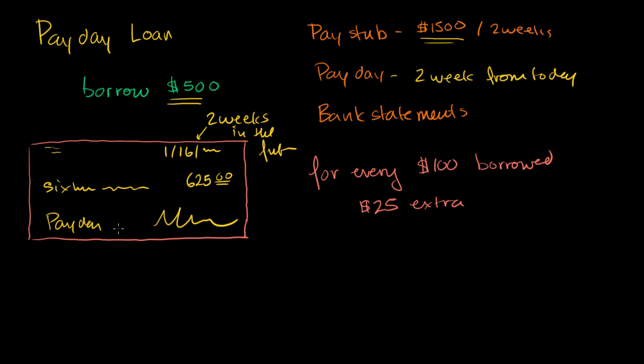And what they're going to say is we're not going to cash this. We're just going to keep this nice little check for us. And when your payday hits, you have an option. You can come back to us and give us $625 in cash. And then we will give you back this check that is uncashed. Or if you don't show up, we are just going to cash this check. So one of these two things are going to happen.